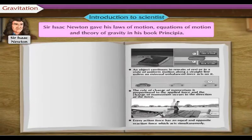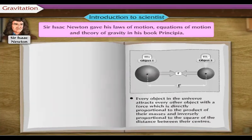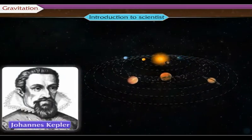He gave his laws of motion, equations of motion and theory of gravity in his book Principia. Before this book was written, Kepler had given three laws describing planetary motions.